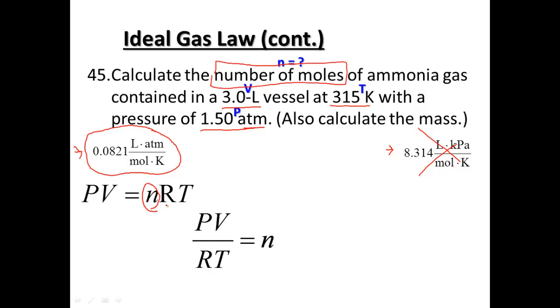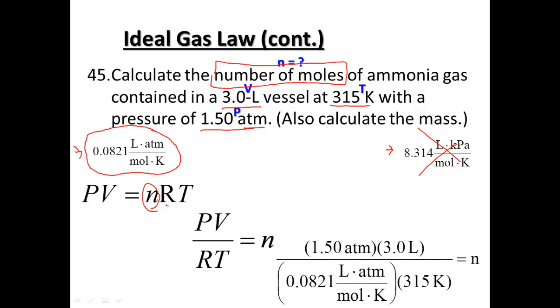Pressure times volume divided by R times temperature. Now when we plug in pressure, volume, number of moles, and temperature. Pressure, 1.5 atmospheres, times volume, 3 liters, divided by our R value, 0.0821 liters, times atmospheres, moles, Kelvin. Notice Kelvin cancels Kelvin, atmospheres cancels atmospheres, liters cancels liters, and then we're left with the mole unit.